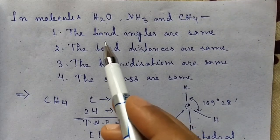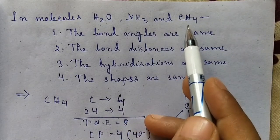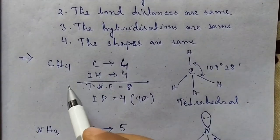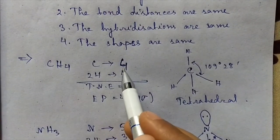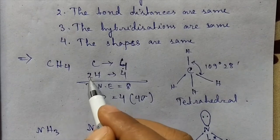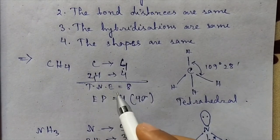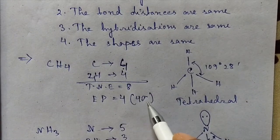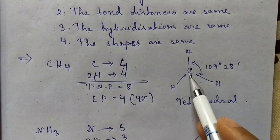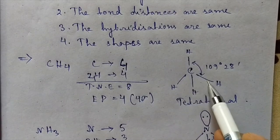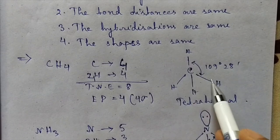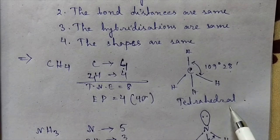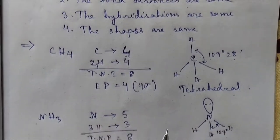First we will draw the structure of H₂O, NH₃, and CH₄ following VSEPR rules. For CH₄, carbon has four valence electrons and four hydrogens will give four electrons, so total number of electrons equals eight, electron pairs equal four. We will have four sigma bonds, so the hybridization will be sp³ and the HCH bond angle is 109 degrees 28 minutes. The geometry will be ideal tetrahedral.